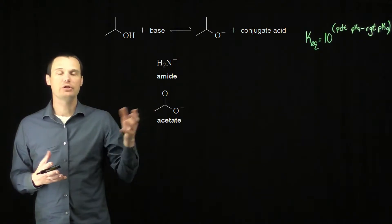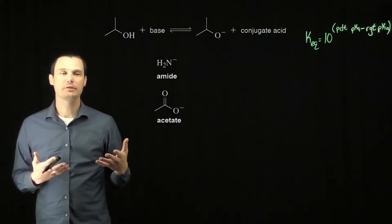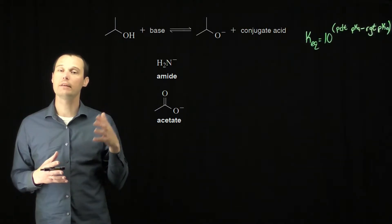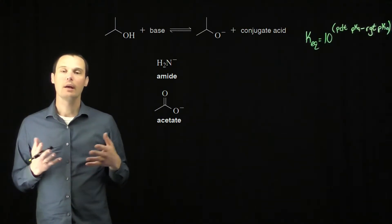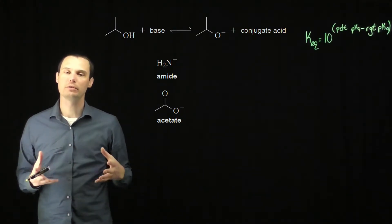So we need to figure out what the conjugate acids are of these bases, what the pKa's are, and then use our Keq formula to calculate the Keq for each possibility. The reaction with the larger Keq is the one that will happen faster.